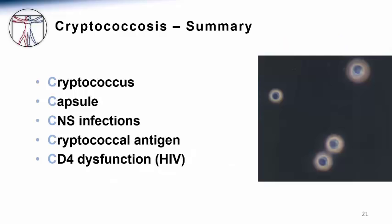In summary, we've discussed an all-too-common opportunistic infection due to Cryptococcus species. A helpful mnemonic covers the key take-home points: it is due to Cryptococcus species; the most characteristic cellular feature is the polysaccharide capsule; the most common and devastating form involves the central nervous system; the shed polysaccharide capsule — the cryptococcal antigen — serves as an important, sensitive, and specific diagnostic test; and the patient population at highest risk has CD4 dysfunction, especially those with late-stage HIV infection.